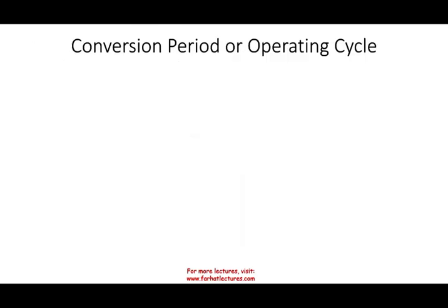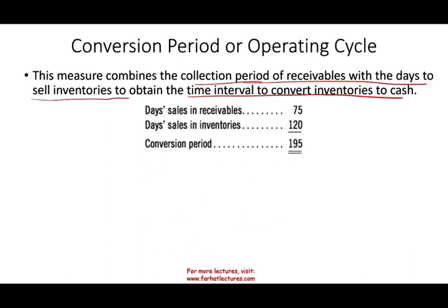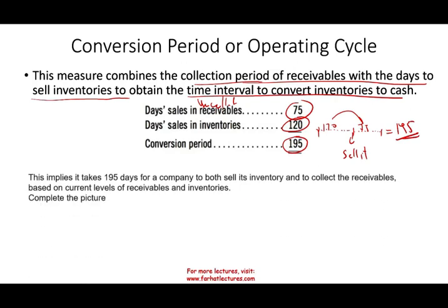Another related computation to both inventory and receivable is the conversion period, or operating cycle. This combines the collection period of receivable with the days to sell inventories, giving us an idea of the time interval to convert inventory to cash. For example, if it takes 120 days to sell inventory and 75 days to collect the receivable, the conversion period is 120 plus 75 equals 195 days.